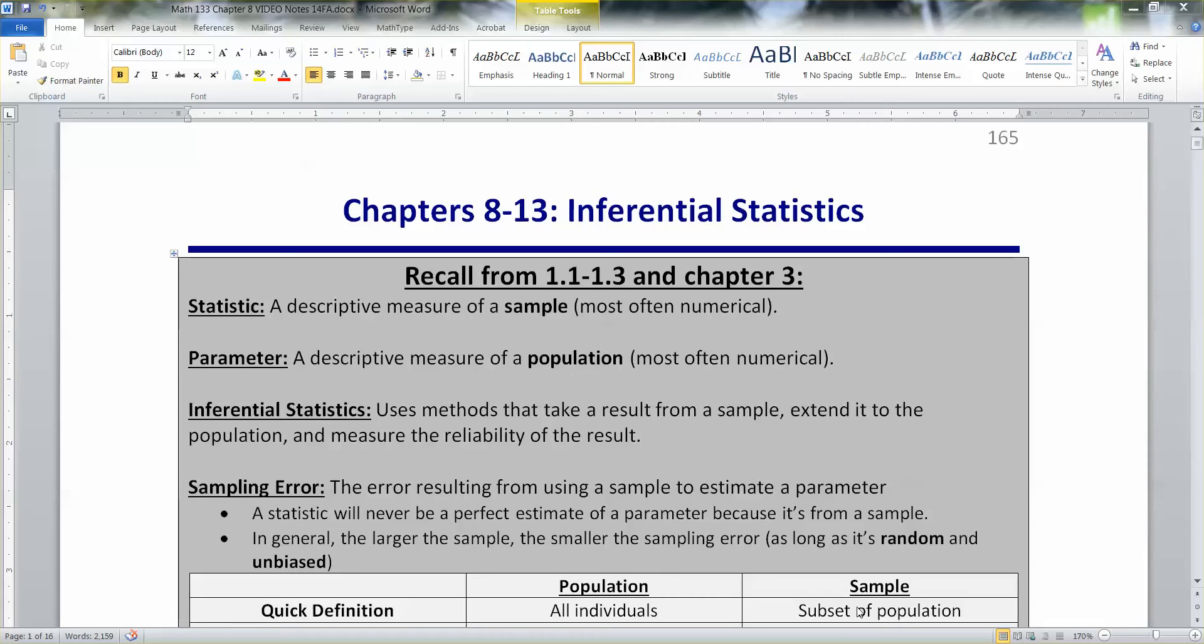For example, the average body temperature from a sample would be x bar, that's a statistic, but the average body temperature for all people on the planet, that would be mu, that's a population value, and that's a parameter.